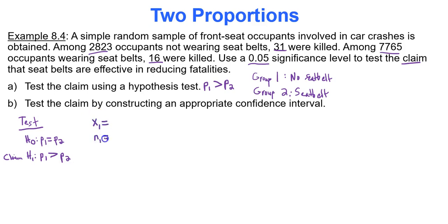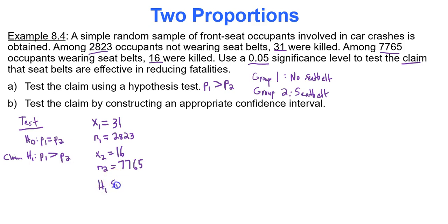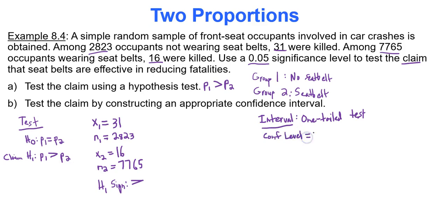For the confidence interval, this is a one-tailed test, so the confidence level is 1 minus 2 times the significance level: 1 − 2 × 0.05 = 0.90. In Google Sheets, enter 31 out of 2,823 for group one and 16 out of 7,765 for group two, with the alternative sign as greater than and confidence level 0.90.